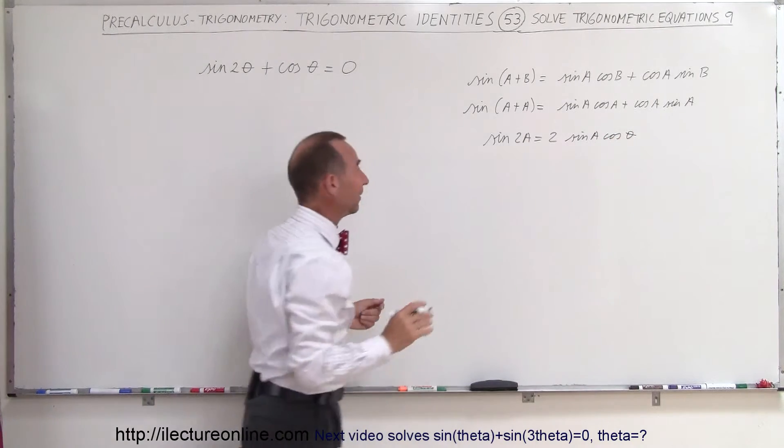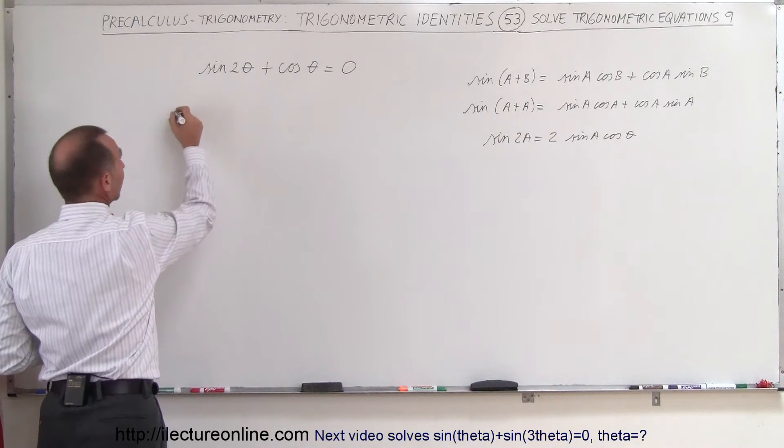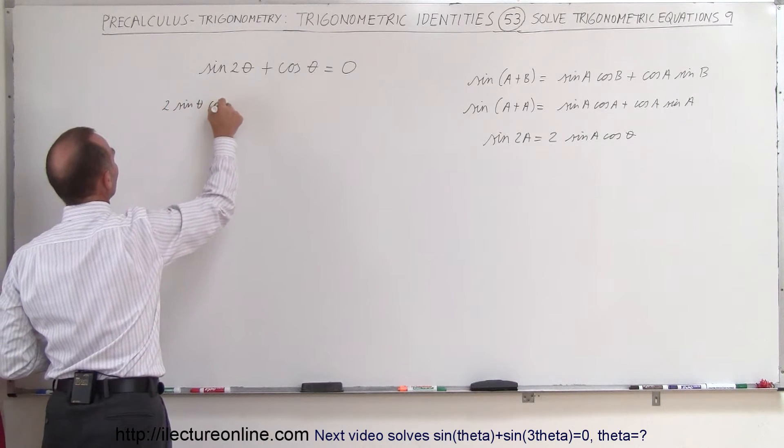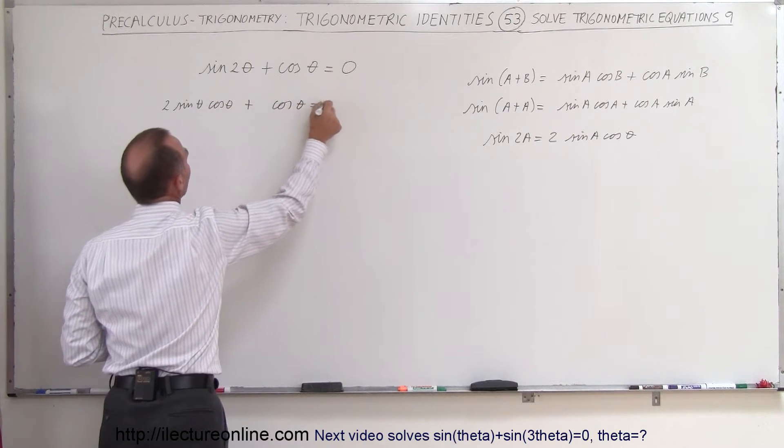In other words, we can come back over here and write the sine of 2 theta the way we did over there. We can turn this into 2 times the sine of theta times the cosine of theta, and then we add to that the cosine of theta, that is equal to 0.